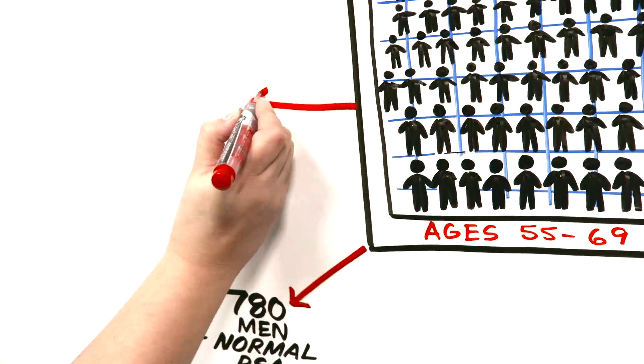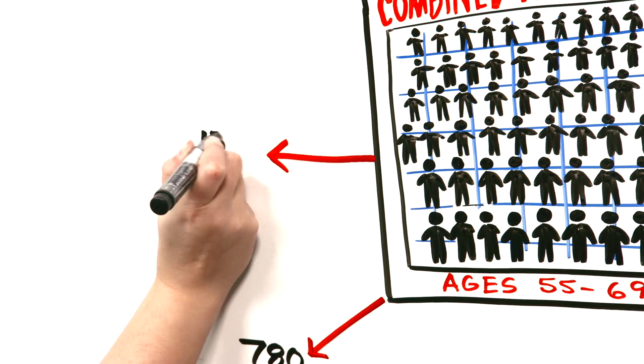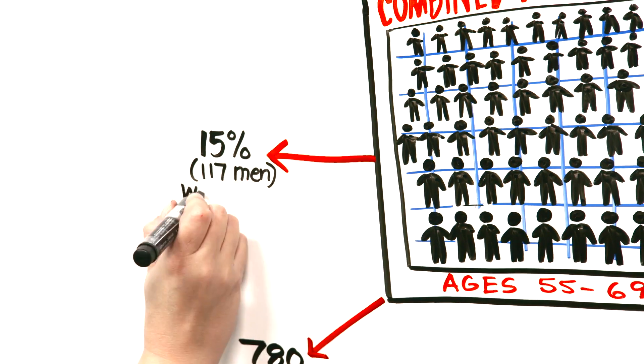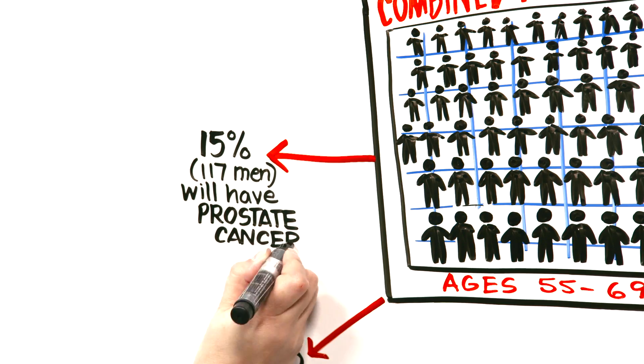However, the recently released prostate cancer prevention trial showed approximately 15% or about 117 men will actually have prostate cancer and be falsely reassured.